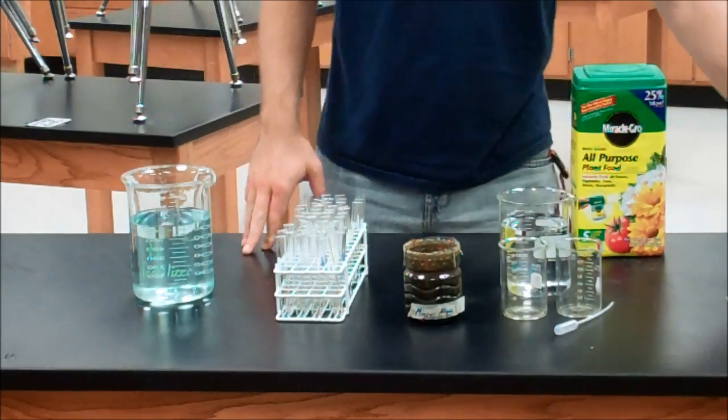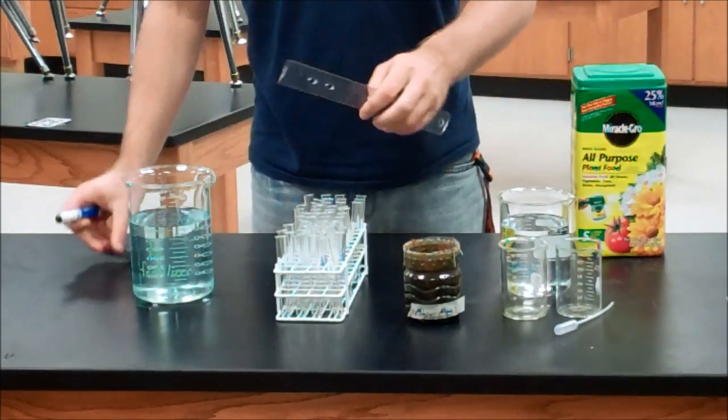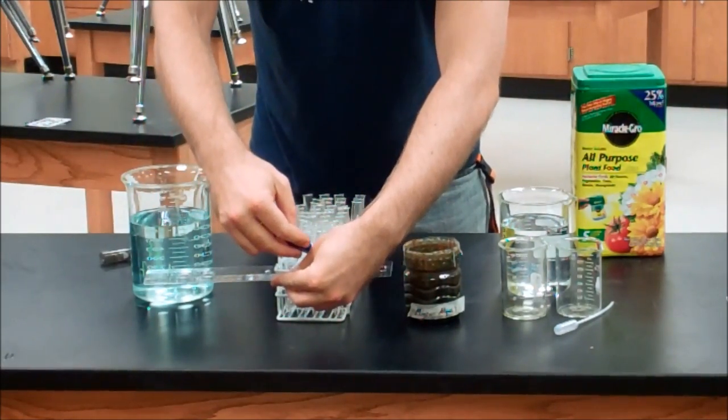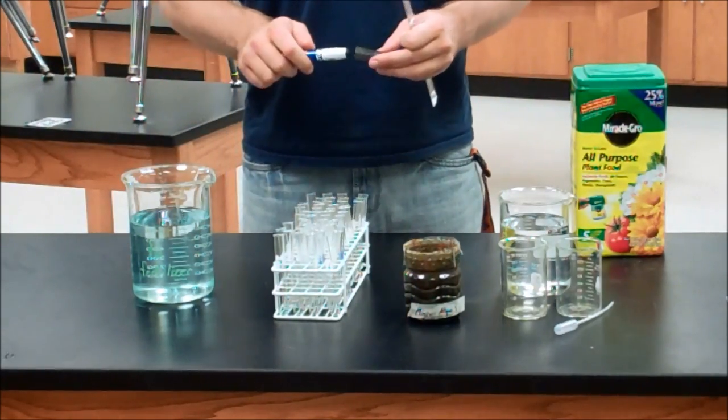Next you'll need some test tubes. On your test tubes you're going to want to mark some consistent volume. However you want to go about doing that consistent volume, make sure that they're all going to be about the same.